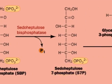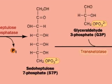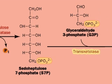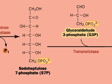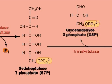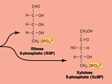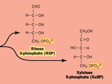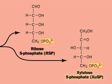In the next reaction, transketolase transfers a two-carbon fragment from cetoheptalose 7-phosphate to glyceraldehyde 3-phosphate, leaving the five-carbon sugar ribose 5-phosphate and producing the five-carbon sugar xylulose 5-phosphate.